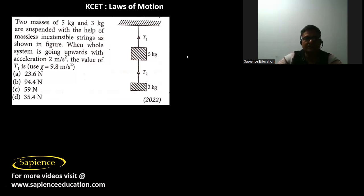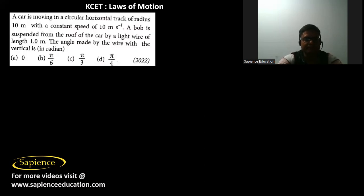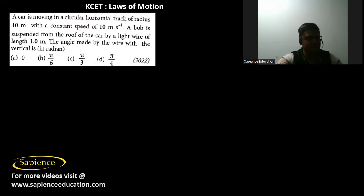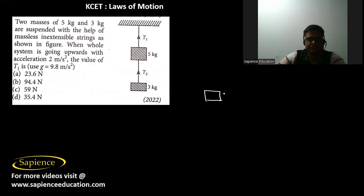Here it is told that two masses 5 kg and 3 kg are suspended with the help of massless inextensible strings and the whole system is going upwards with some acceleration a. The 5 kg mass is on top with tension T1, and the whole system moves upward. We have to find the value of T1.